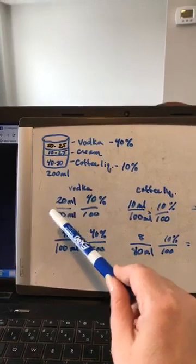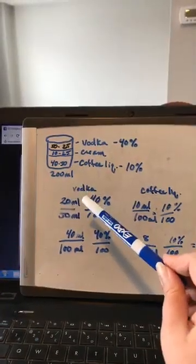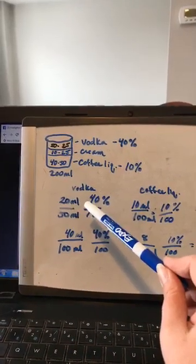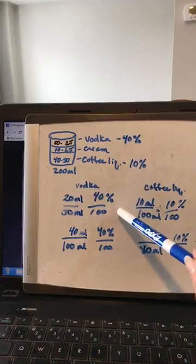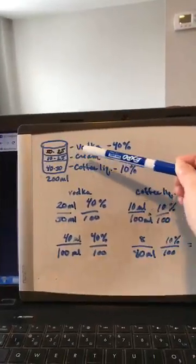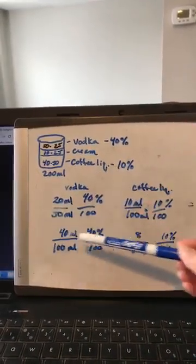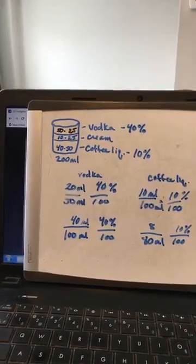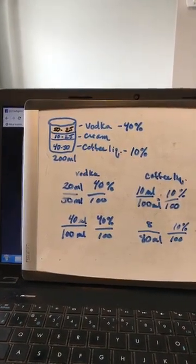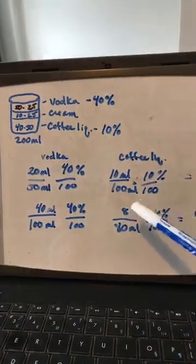That's what we did in this calculation here — 20 milliliters of the 50 milliliters of vodka was 40% alcohol. Can you just give me a thumbs up to let me know if that makes sense so far? I want to make sure you're okay with how I calculated the percentage here. Next up is the coffee liqueur, and I did exactly the same math, but the amount of coffee liqueur changed because the ratio of coffee in the drink is 40 to 50 milliliters.